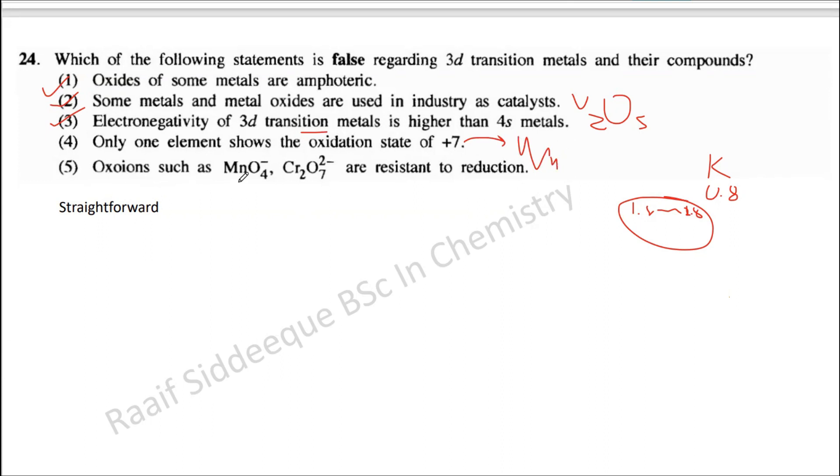Oxide ions such as MnO4- CR2O7 2- are resistant to reduction, this is totally wrong. Because you know these get reduced in acidic medium as MnO2+, in basic medium as MnO2, and this one in acidic medium as CR3+, in the basic medium as CR2O3. So there is reduction, that is why they are used as oxidizing agents, because they get reduced, the other species get oxidized.